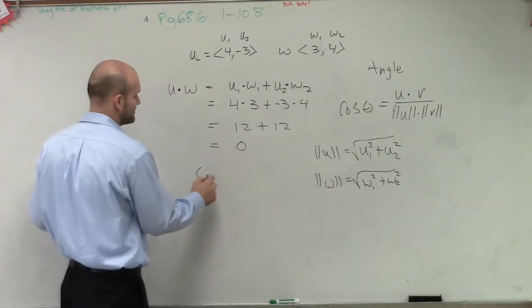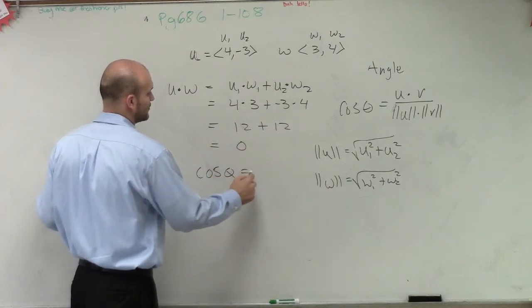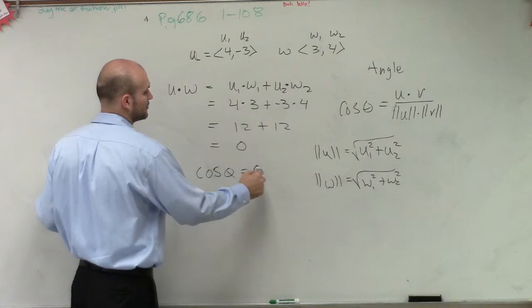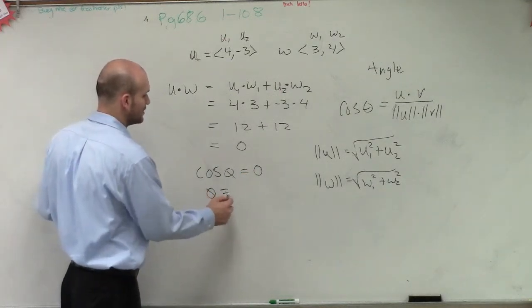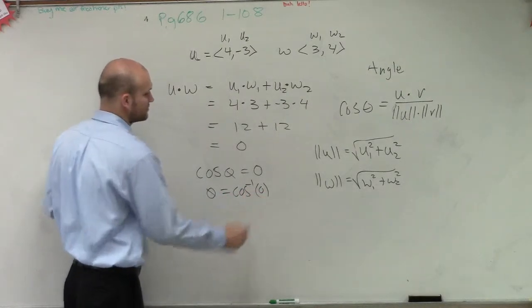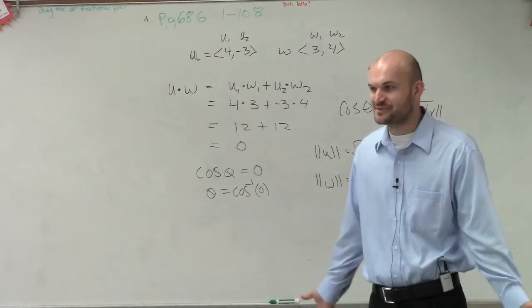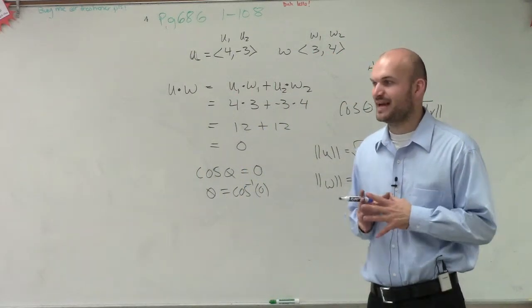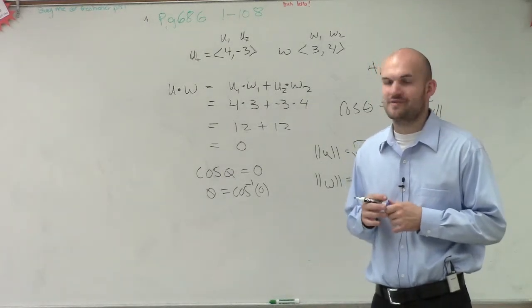So therefore, I have cosine of theta equals 0. So therefore, theta equals inverse cosine of 0. And does anybody know what the inverse cosine of 0 is going to be? Or what happens when our dot product equals 0?